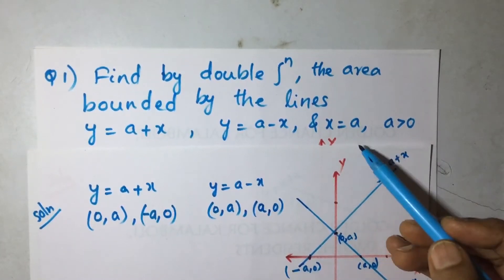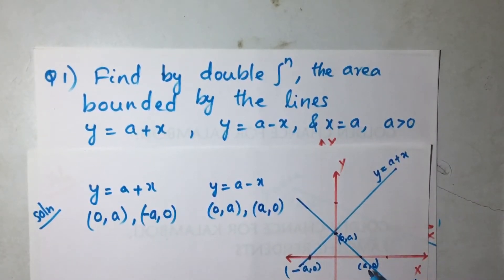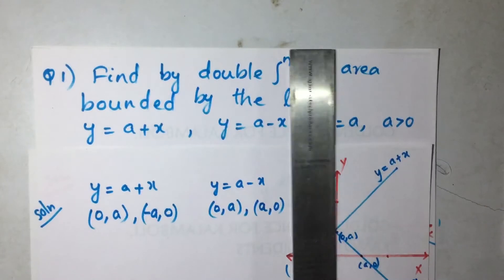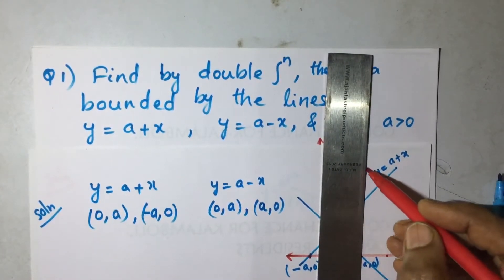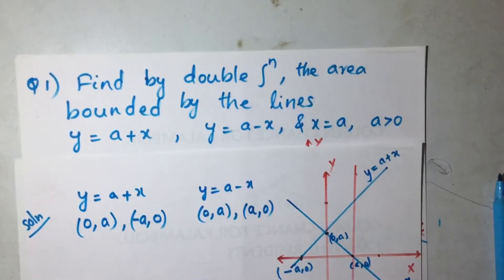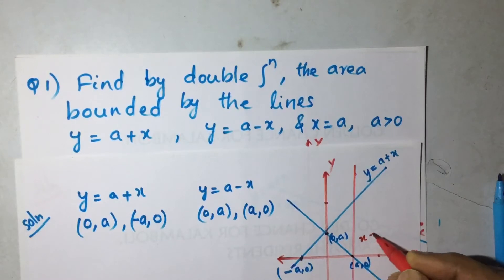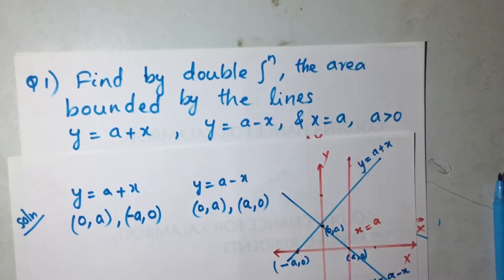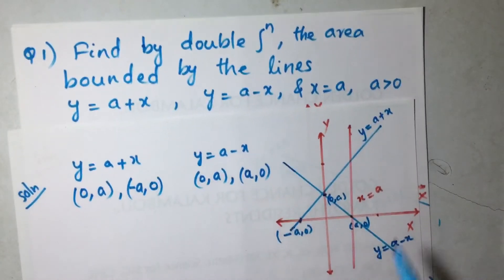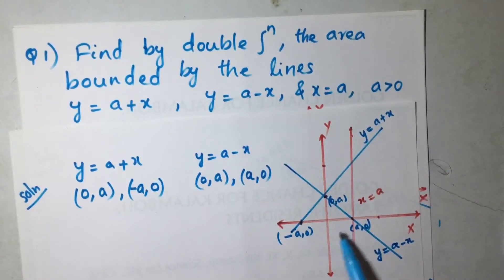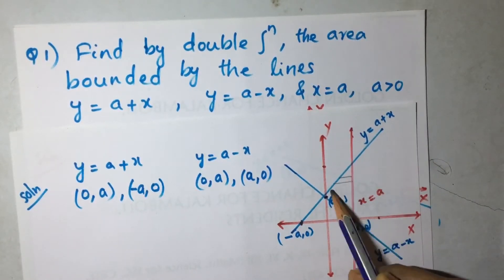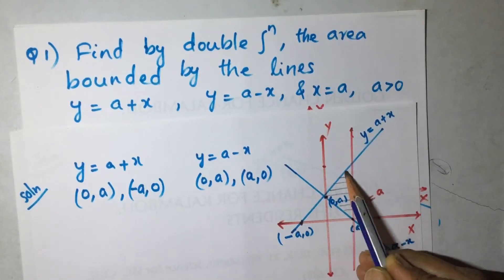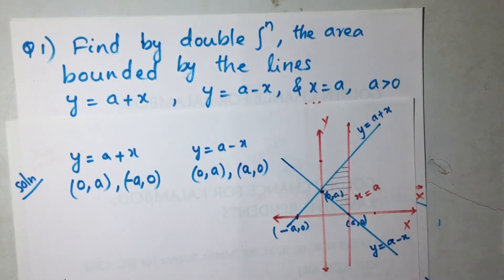The next line is x equal to a, which is a straight line passing through x equals a. Since a is greater than 0, the region will be on the positive side. The region of integration is this triangle.